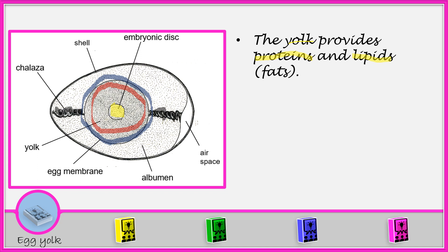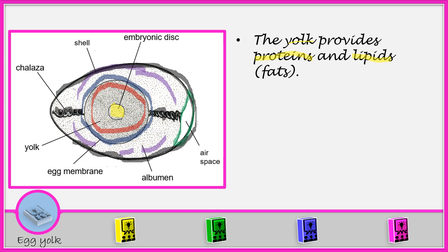On this side, we have a space. This space is what we call the air space. Then we have this area here — all this area is filled with what we call the albumen. And then outside, we have a cover that is covering the whole shell. That cover outside is what we call the shell.